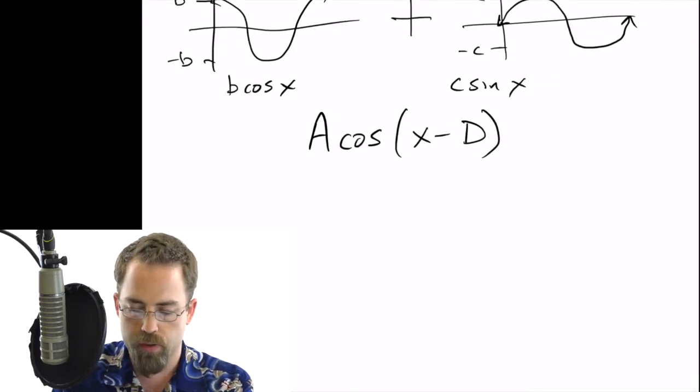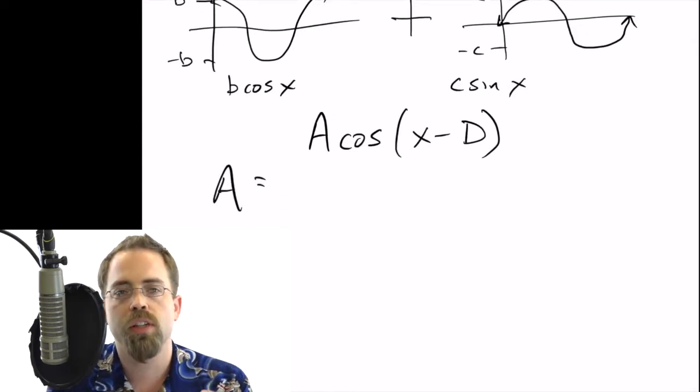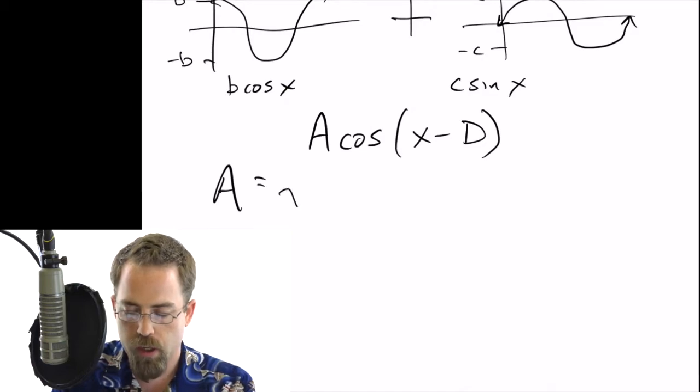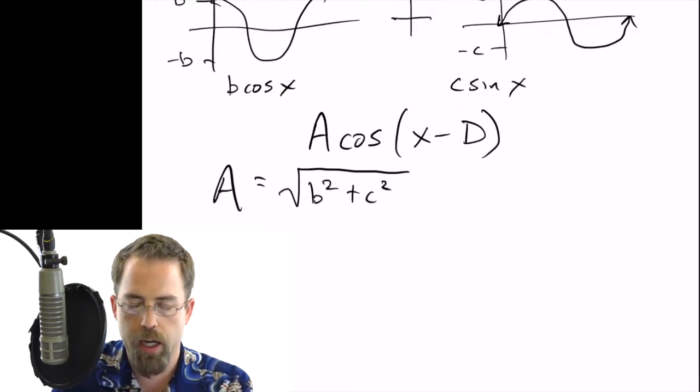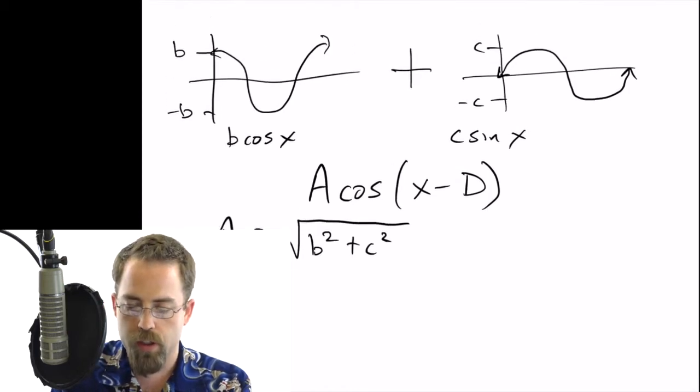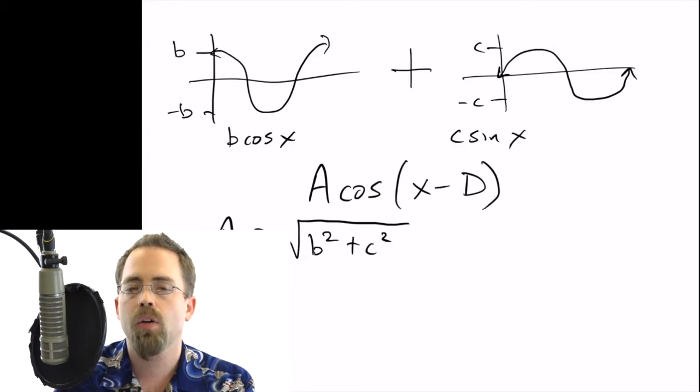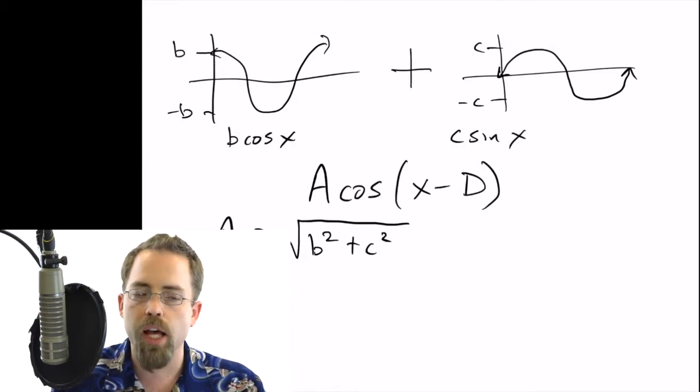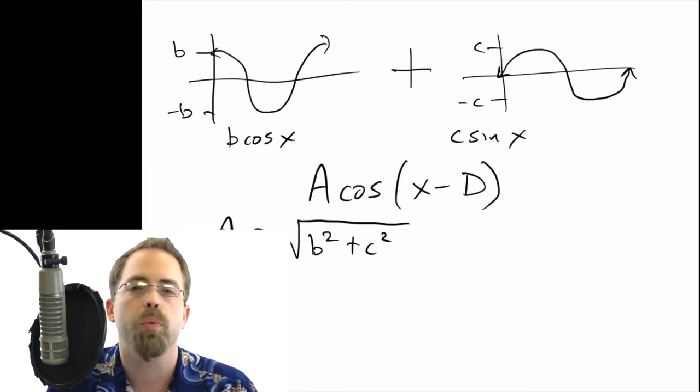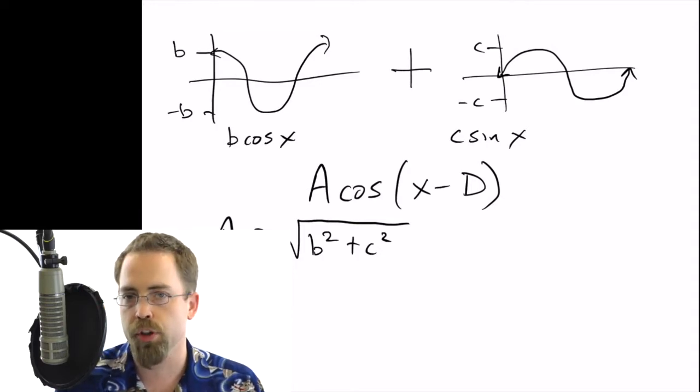The thing to see is that the resulting height of the cosine wave is just Pythagoras done with the other two heights. So you look over here at these numbers for the cosine and for the sine, and if those were legs of a right triangle, how long would the hypotenuse be?